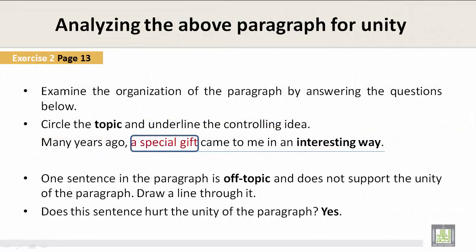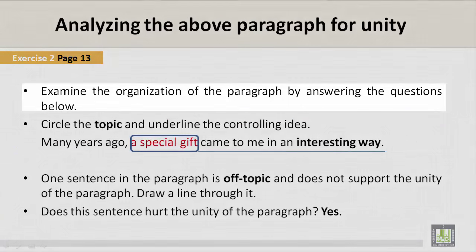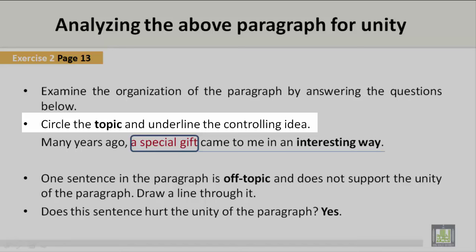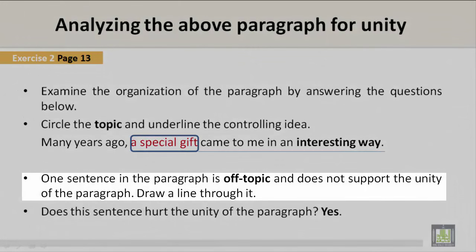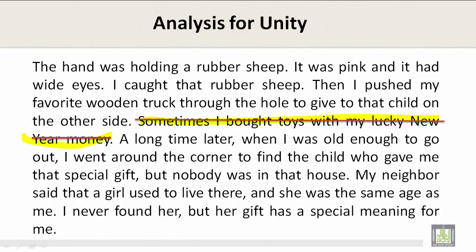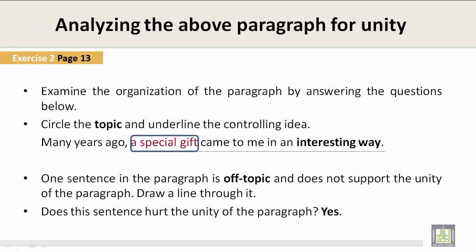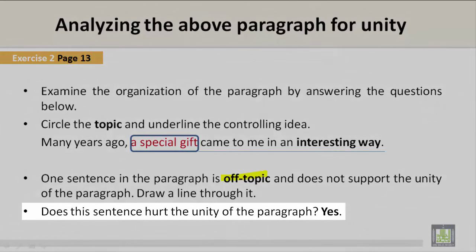Analyzing the above paragraph for unity — Exercise 2, page 13. Examine the organization of the paragraph by answering the questions below. Circle the topic and underline the controlling idea. In the sentence 'Many years ago, a special gift came to me in an interesting way,' a special gift is the topic, and the controlling idea is came to me in an interesting way. One sentence in the paragraph is off topic and does not support the unity of the paragraph — draw a line through it. That sentence is: 'Sometimes I bought toys with my lucky new year money.' This sentence does not support the unity of the paragraph and it is off topic. And does this hurt the unity of the paragraph? Yes. Absolutely.